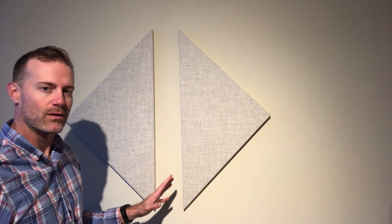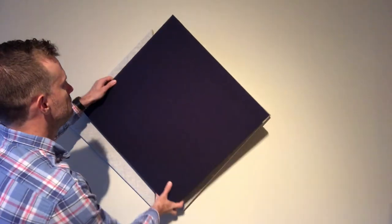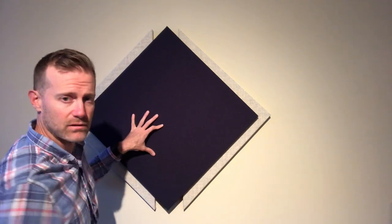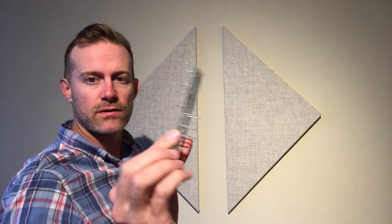All right, we got the triangles up and placed exactly where we want them. Now the final step is to get the square placed where we want it on top of the triangles to complete the nice diamond themed look.